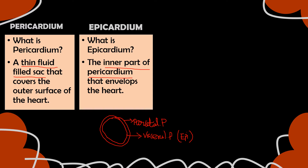The parietal pericardium is the outermost layer. Here is the heart with its chambers. The visceral pericardium is the layer near to the heart — the layer that surrounds the heart. So the overall outermost layer is the parietal pericardium, but the layer which directly surrounds the heart is called the visceral pericardium.